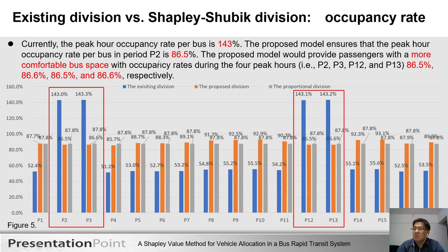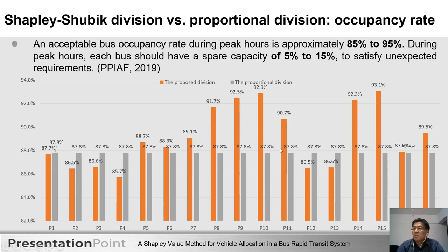Currently, the peak hour occupation rate per bus is 143%. The proposed model ensures that the peak hour occupation rate per bus is approximately 86.5%. The proposed model will provide passengers with more comfortable bus space, with an occupation rate during the four peak hours — P2, P3, P12, and P13 — of approximately 18.5%. As you can see, the original bar values are 18.6%, 18.5%, and 18.6%.